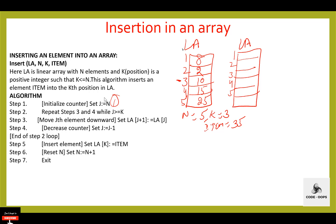First of all, initialize the loop counter variable. Set j equal to N — j is equal to 5, since the value of N is 5. Then repeat steps 3 and 4 while j is greater than or equal to k. The value of j is 5 and the value of k is 3. Since 5 is greater than or equal to 3, the condition is evaluated to be true.